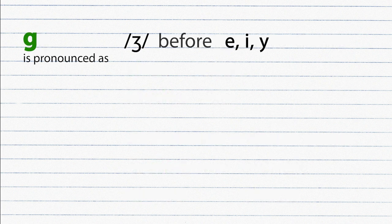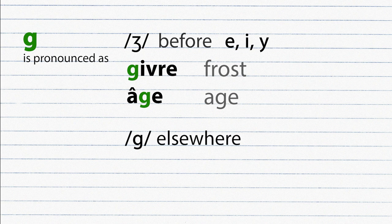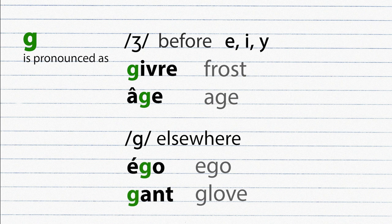Letter G before e, i and y is pronounced as Je. Givre, âge. And elsewhere is pronounced as G. Ego.